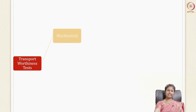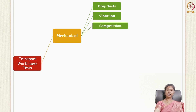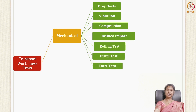The transport worthiness test can be divided into the mechanical test, which includes the drop test, the vibration test — all this happens on the road or rail — the compression test, and the incline impact test. In today's class we will continue with the mechanical tests: rolling test, drum test, dart impact test, and a few climatic tests.